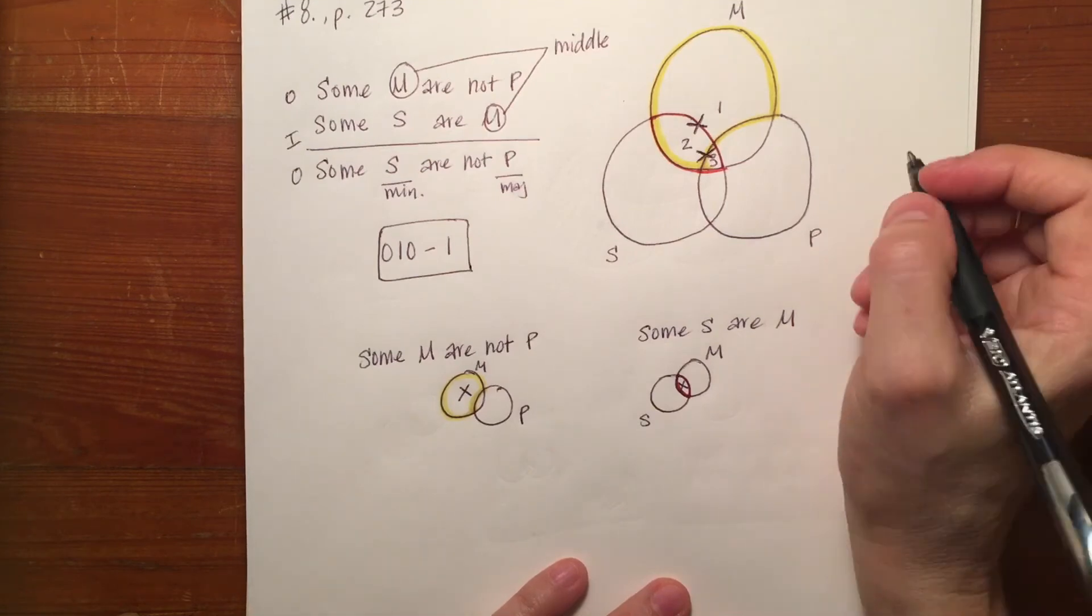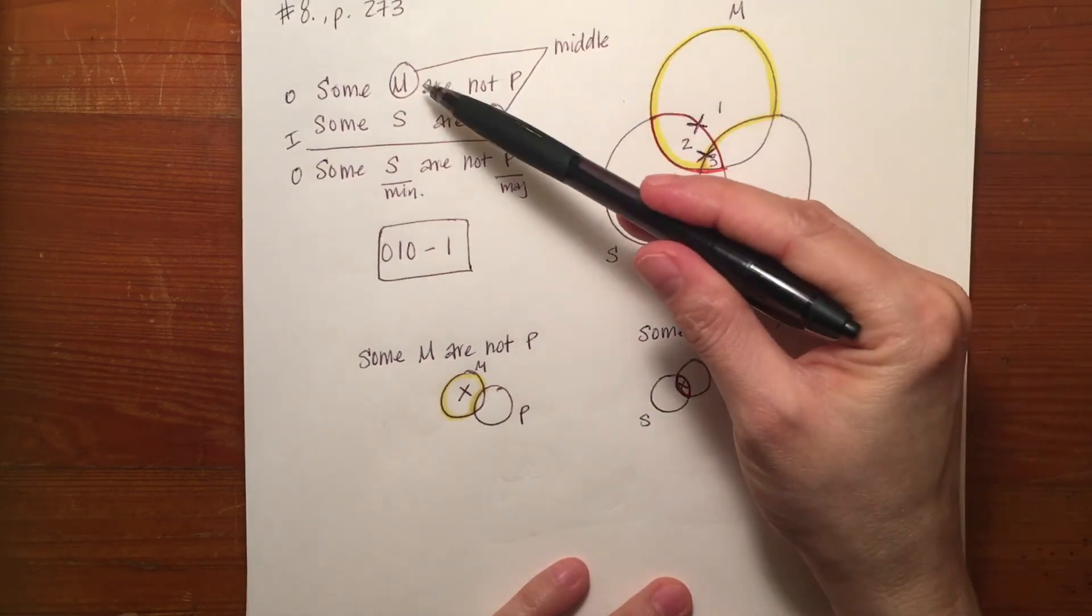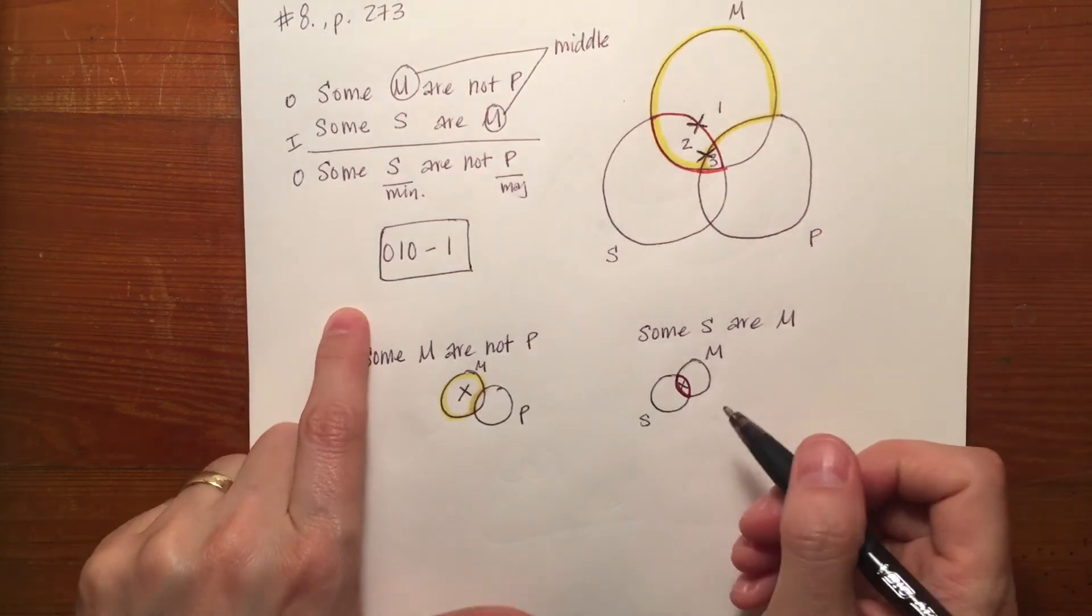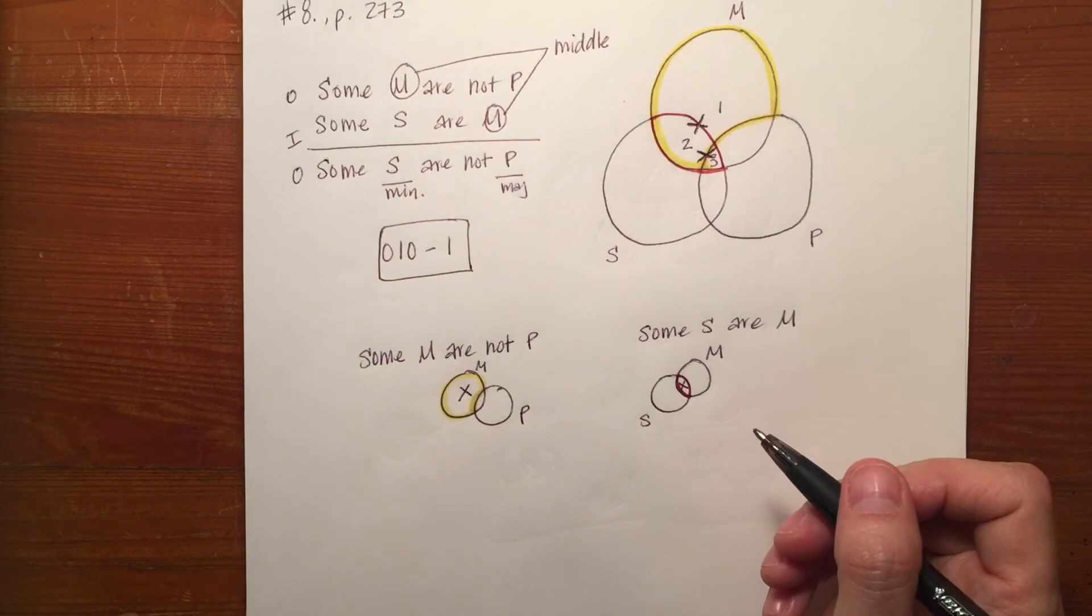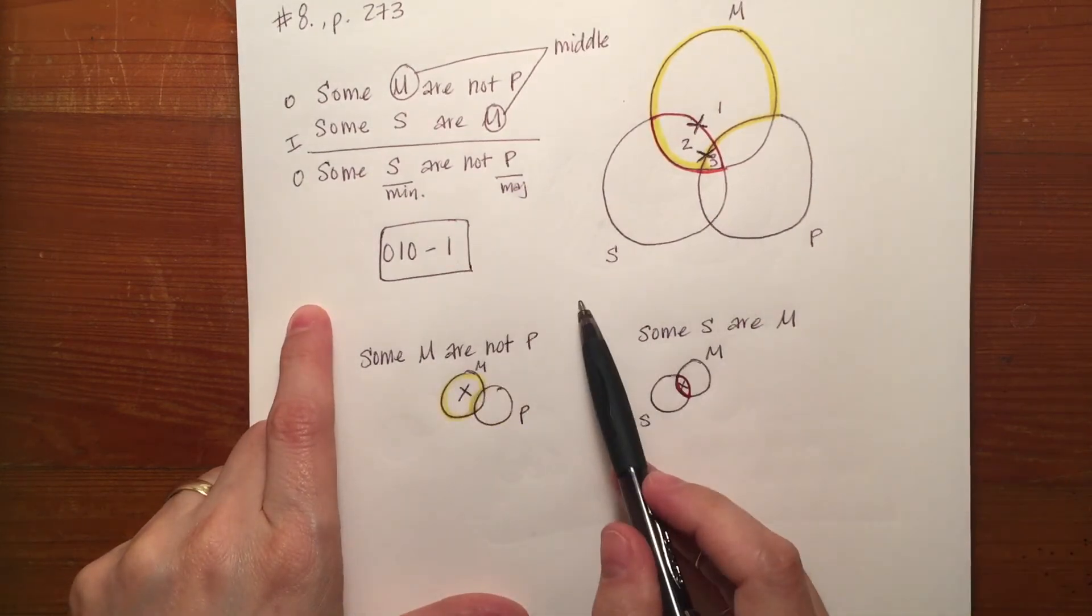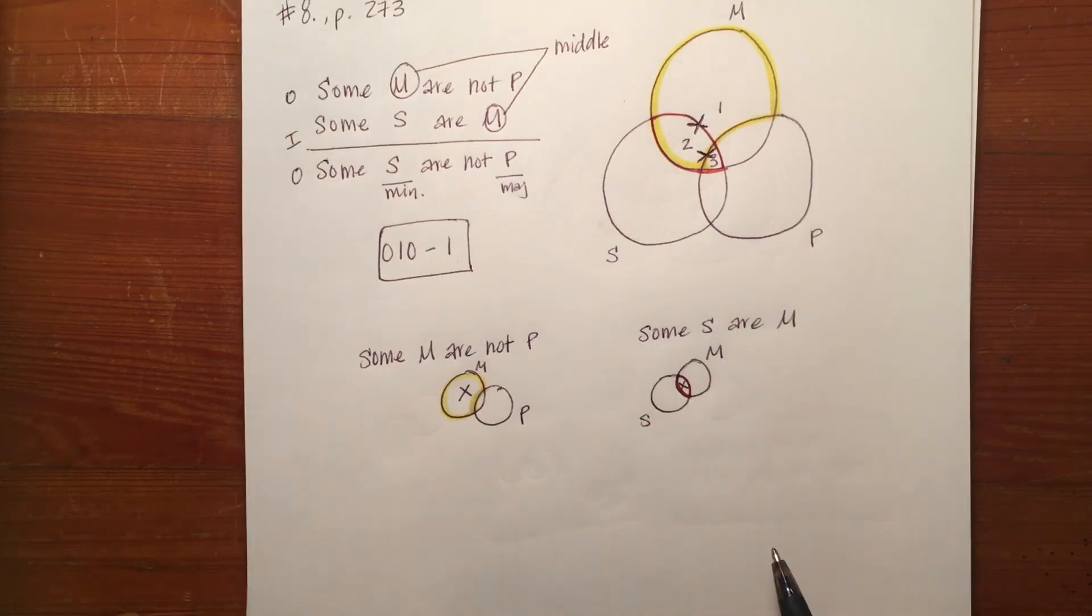So I hope that helps you to understand how to do a Venn diagram with two particular premises. And of course the last bit would be to go and look at the chart to determine whether OIO1 makes this Venn diagram valid, conditionally valid, or invalid from both perspectives.